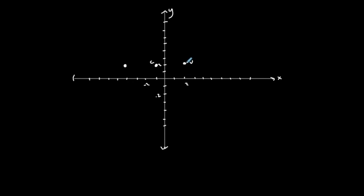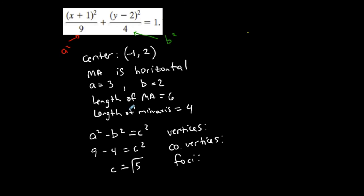So that's at 2, 2 and negative 4, 2. So my vertices are 2, 2 and negative 4, 2. I want you to notice that the y-coordinate of the vertices are the same. The x-coordinates are the ones that change because it's a horizontal major axis. The x-coordinates are going to change because they're moving left and right.